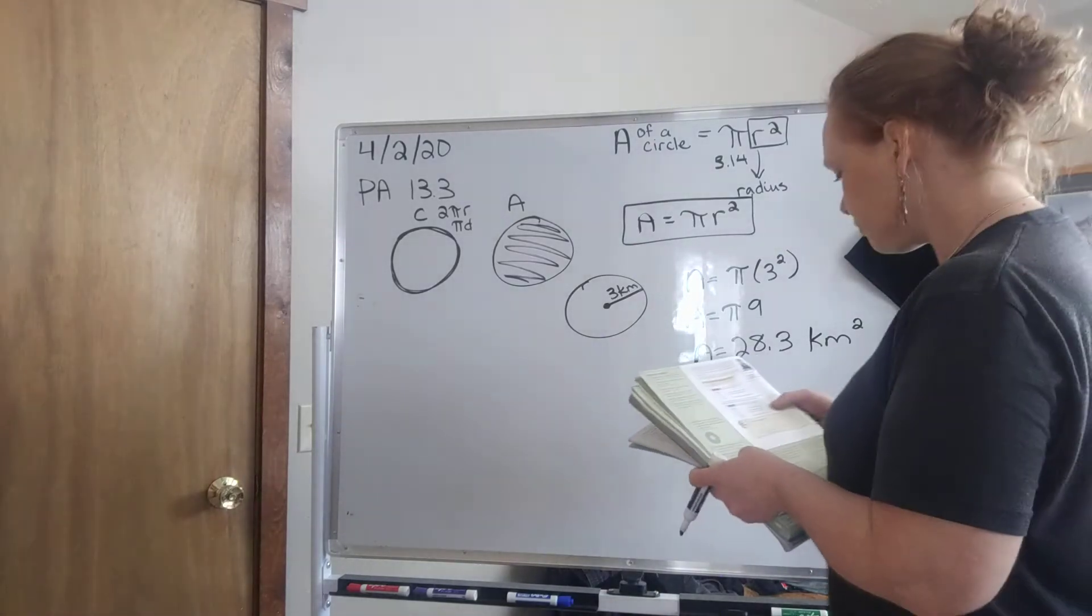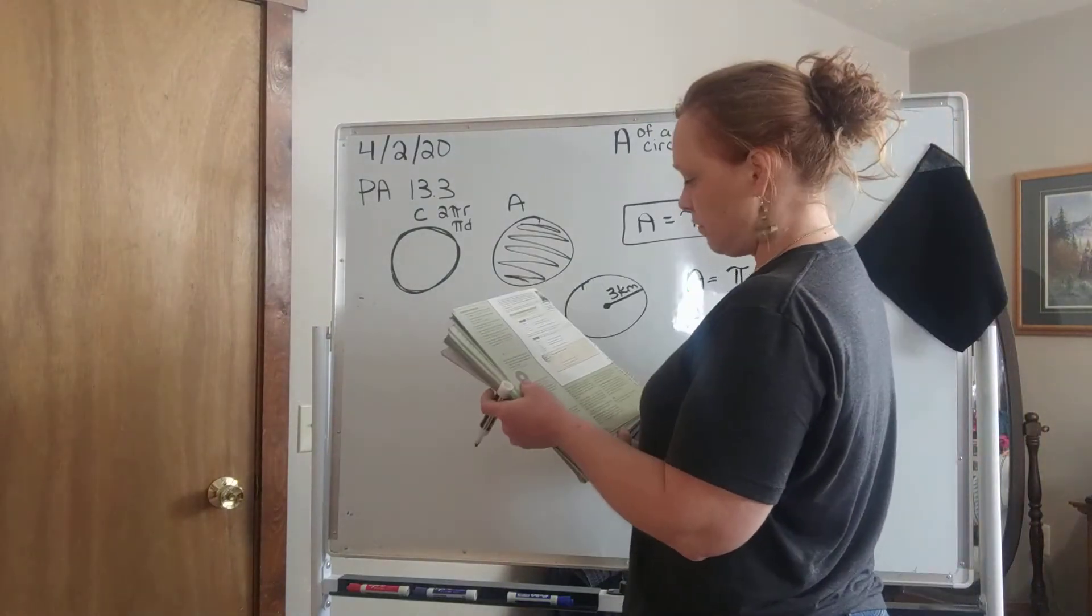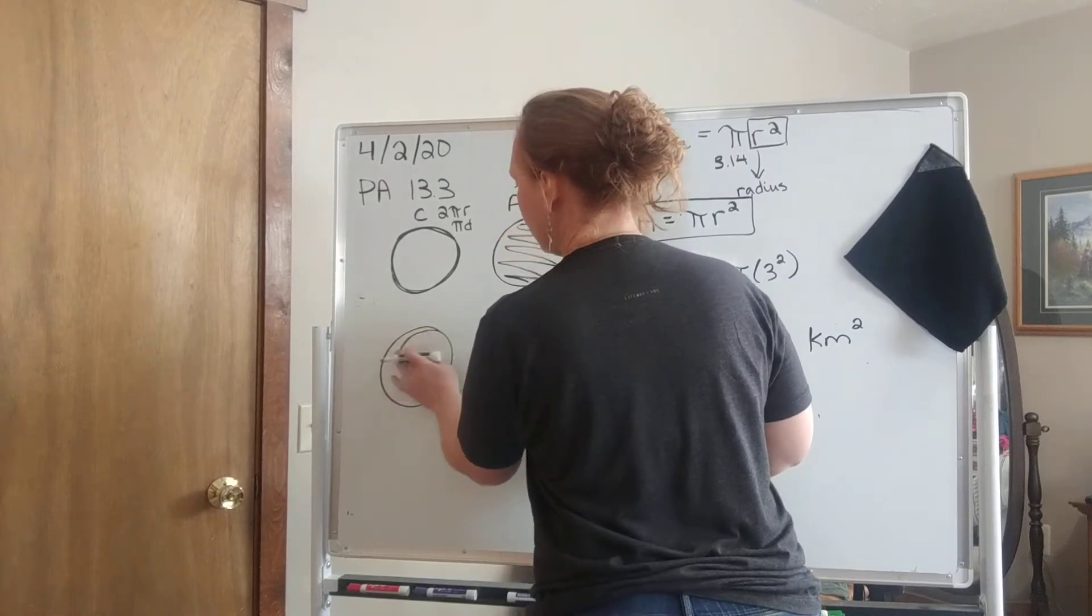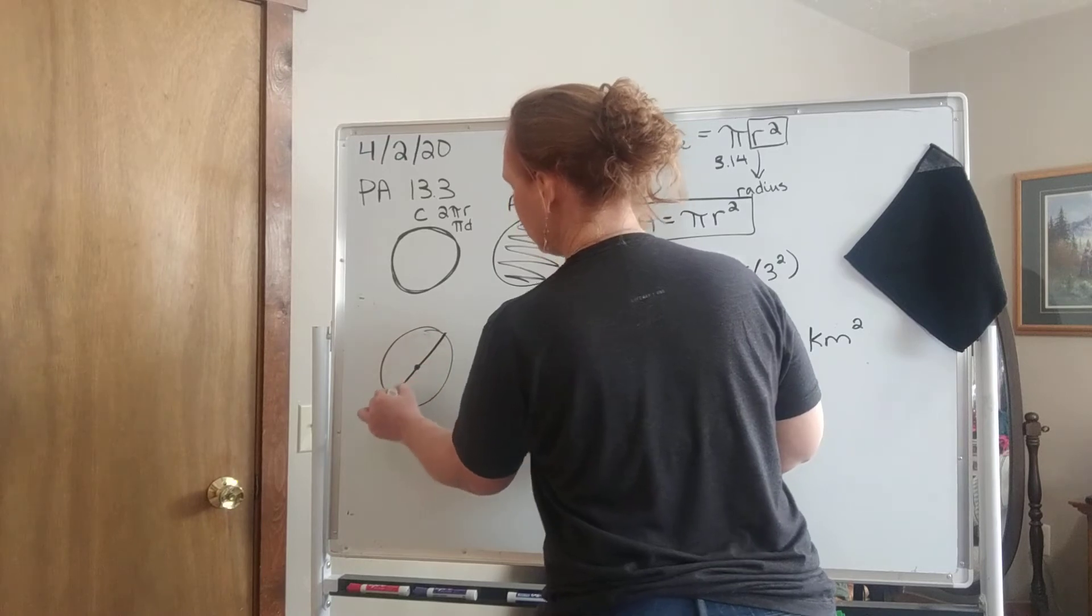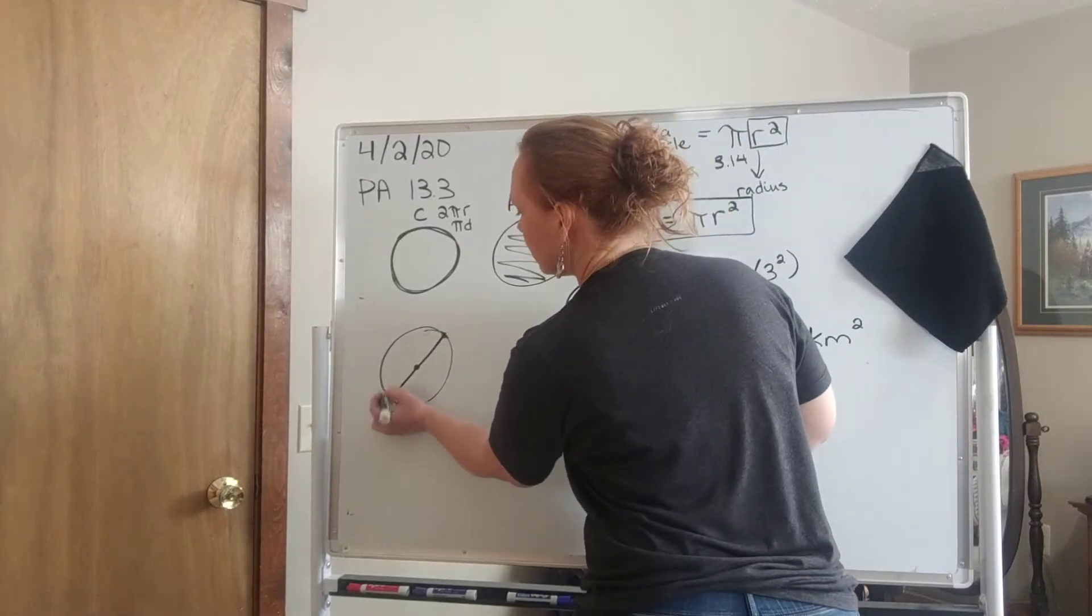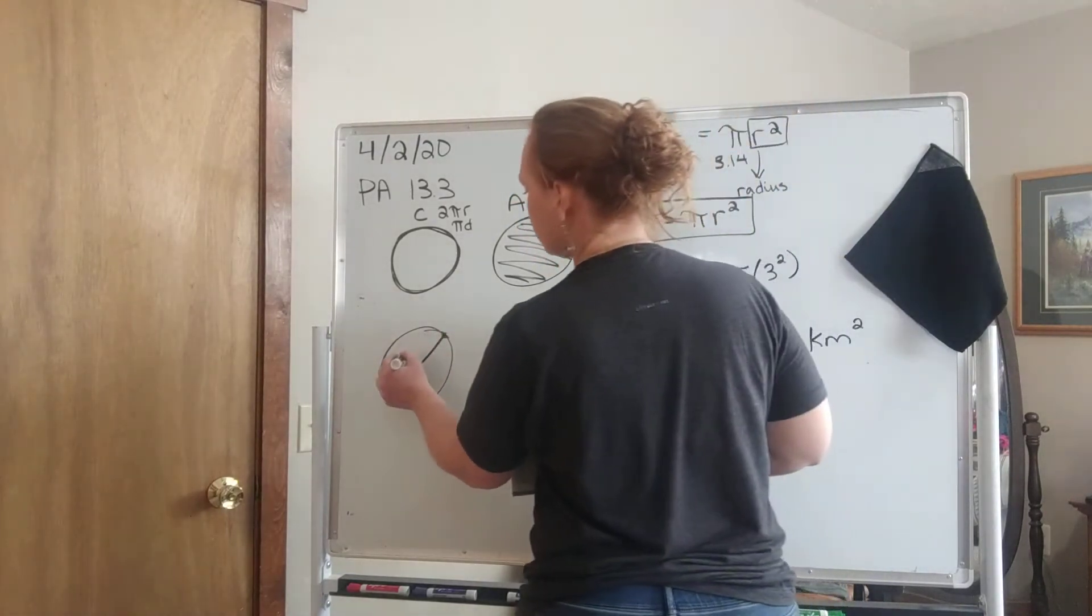Example two, find the area of a circle whose diameter is 5 meters. So this time we've got a circle, and we have a diameter. So what is the diameter? Remember, a diameter goes all the way across. What they're saying from here to here is 5 meters.